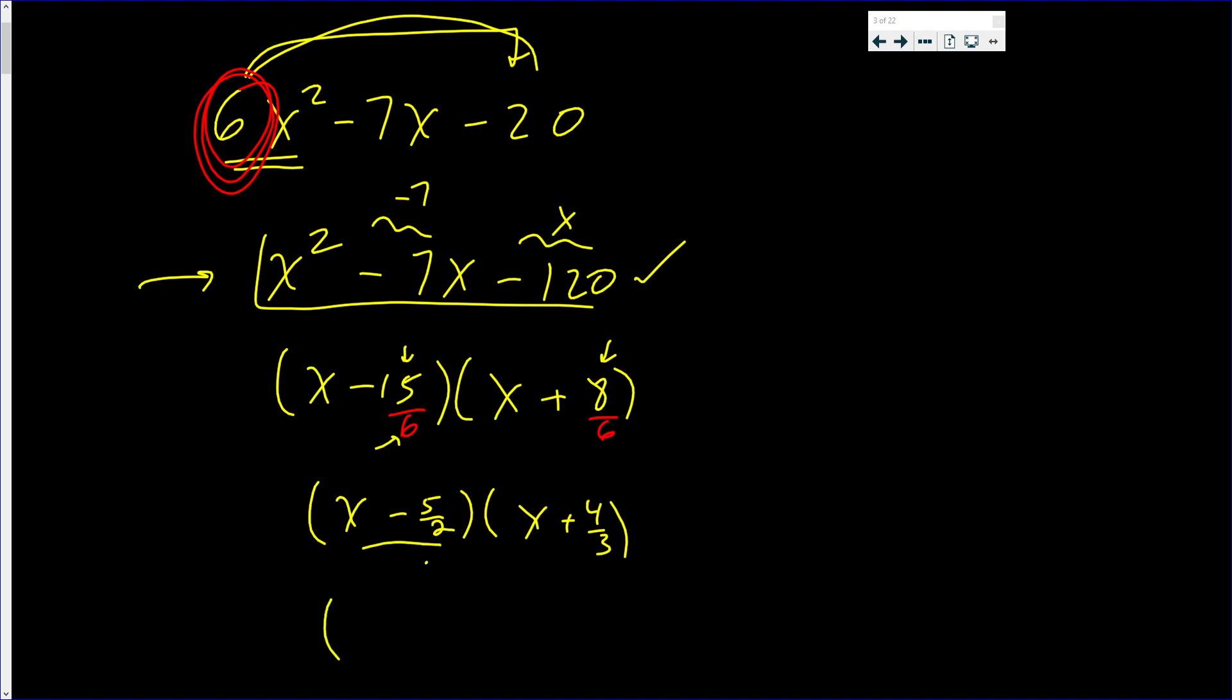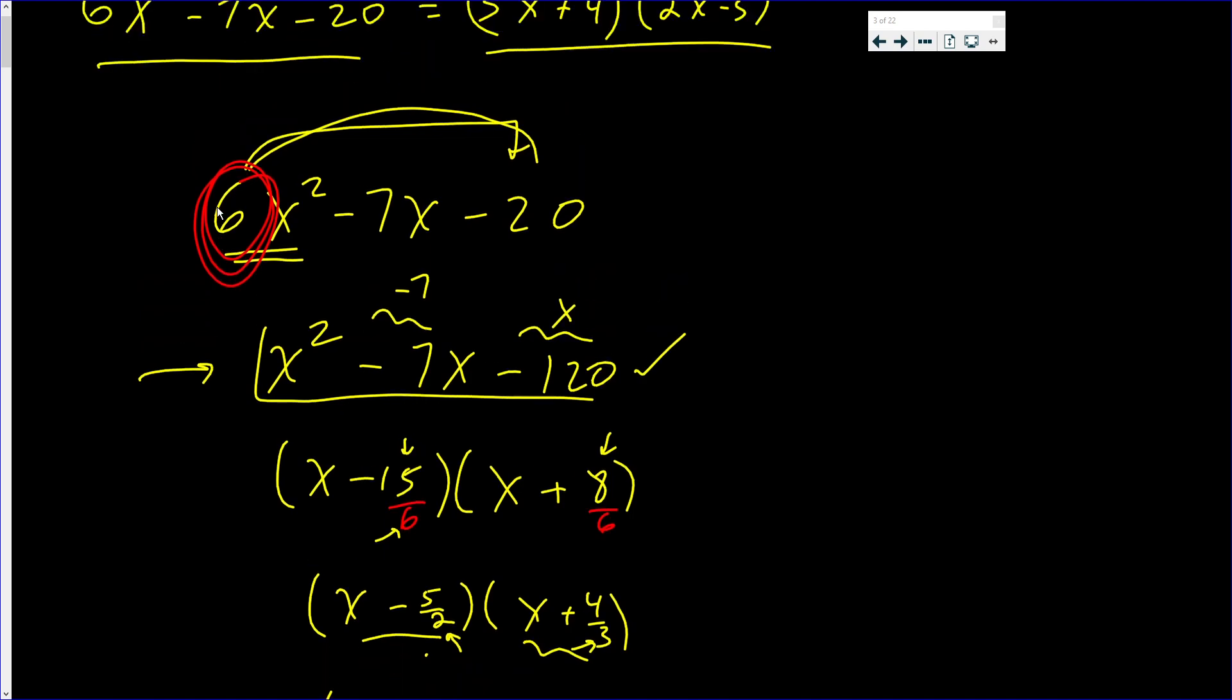Last step, multiply this equation by 2 and you'll get 2x - 5. Multiply this equation by 3 and you'll get 3x + 4. This is exactly what I said it would be.